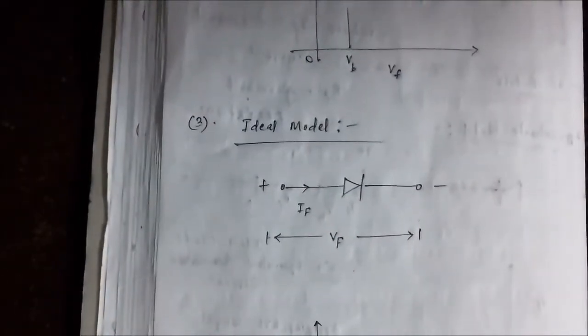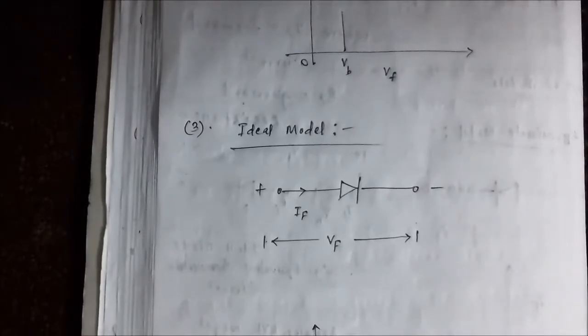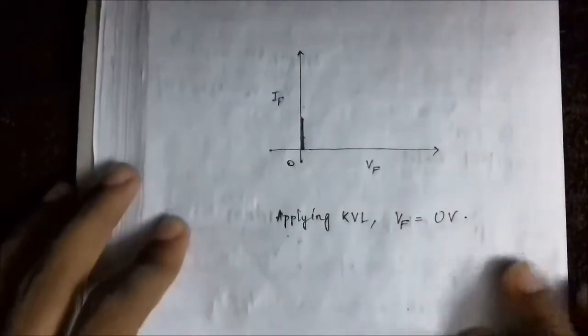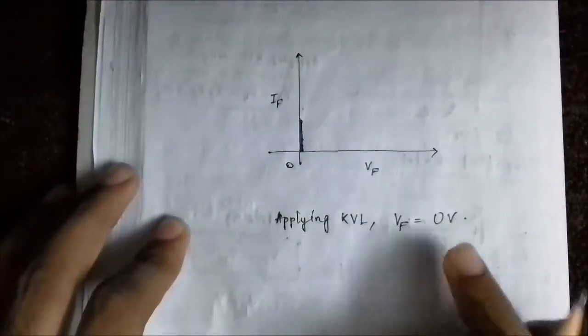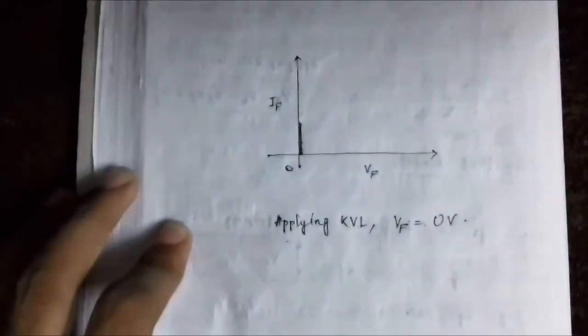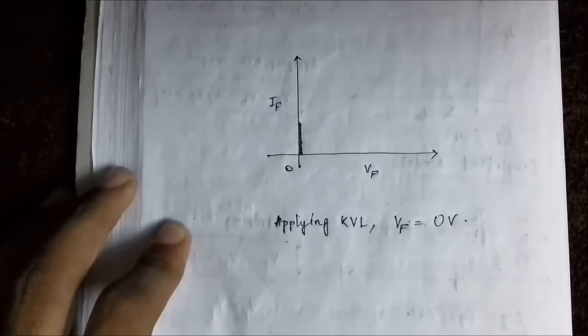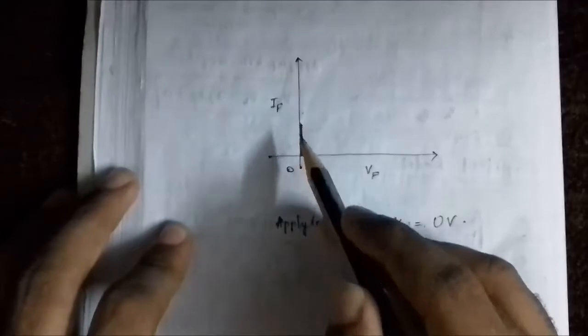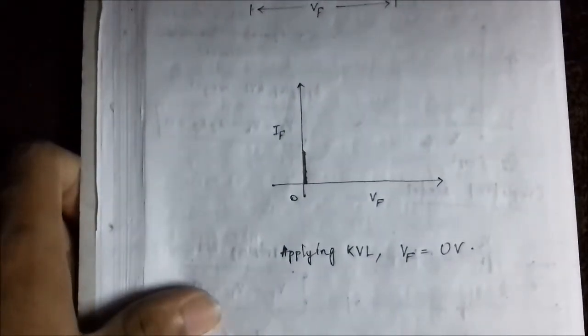The ideal model has no built-in potential or potential barrier and no internal resistance taken into consideration. Applying KVL, V_F equals 0 volts — meaning at 0 volts, current conduction is achieved in the PN junction diode. There is a sharp increase in current at 0 voltage.